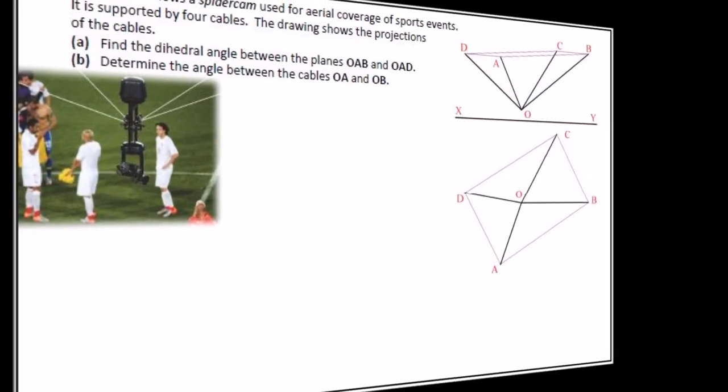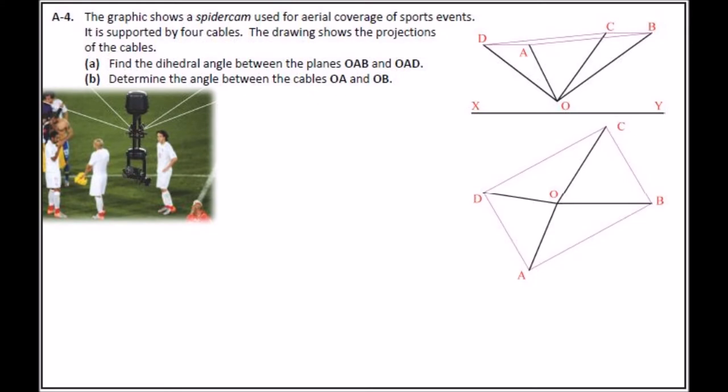And then A4, basically corner jump. So you had to find the dihedral angle between OAB and OAD and determine the angle between the cables. So again, straightforward enough. So section A, I'm pretty happy with section A, four recognizable topics there, four completable questions. You only have to do the three. So I'd be happy enough there with section A.